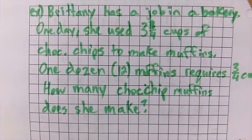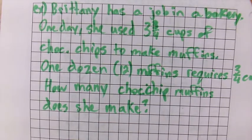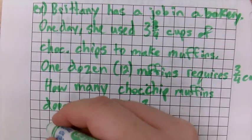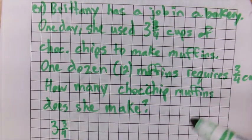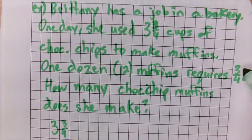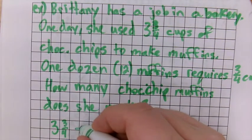Let's do a word problem example here. It says, Brittany has a job in a bakery. One day, she used 3 and 3 quarter cups of chocolate chips to make muffins. One dozen, also known as 12 muffins, requires 3 quarter cups. Sorry, 3 quarter cup. How many chocolate chip muffins does she make, or did she make that day?